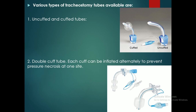Different types of tracheostomy tubes are available. Among them, one is the uncuffed tube — you can see this is a cuffed tube and this is the uncuffed tube. There is also a double cuff tube; this is a single cuff tube and this is a double cuff tube. In the double cuff tube, each cuff can be inflated alternately to prevent pressure necrosis on one side of the trachea.